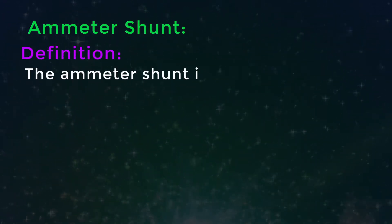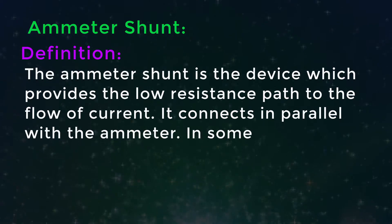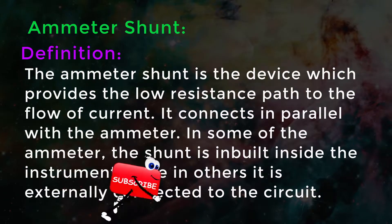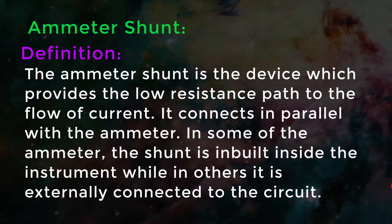Ammeter shunt definition: The ammeter shunt is the device which provides a low resistance path to the flow of current. It connects in parallel with the ammeter.